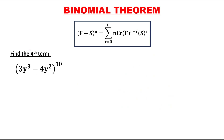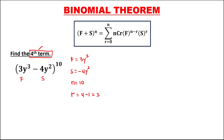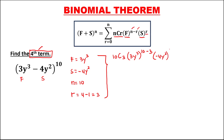For the third given, find the 4th term. The first term is 3y to the power 3, and the second term is negative 4y to the power 2. Then n equals 10. For r, since we're looking for the 4th term, r equals 4 minus 1, so r is equal to 3. Applying the formula: n is 10 choose 3, then times 3y to the power 3, to the power n minus r — 10 minus 3 — then times negative 4y to the power 2, to the power r, which is 3.